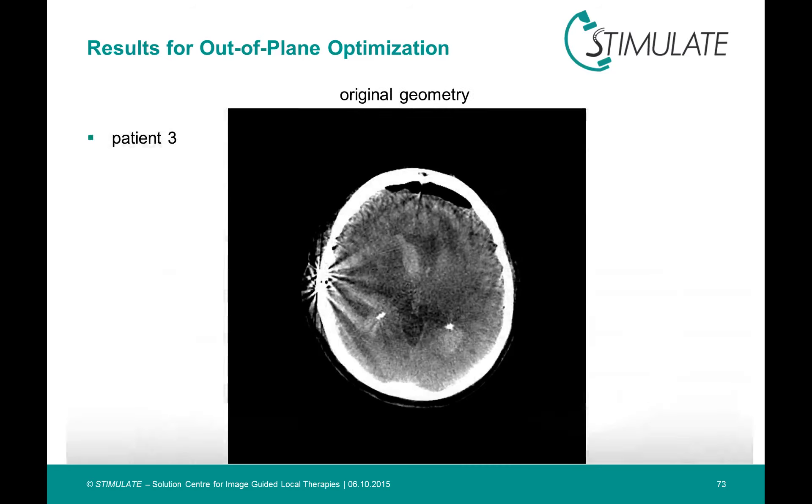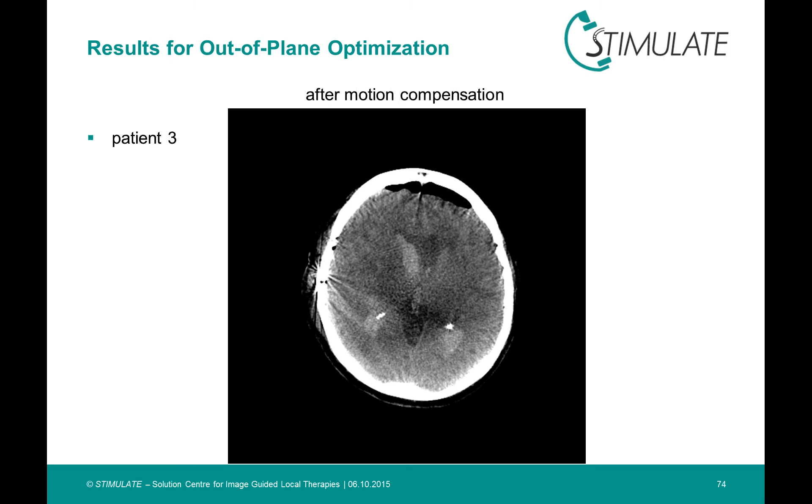Here is a further patient, where you can see also radial streaks starting at a metal plate. Also blurring at the edges of the tissue is visible. And now the same slice after the correction.